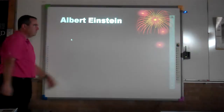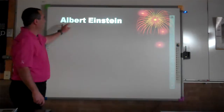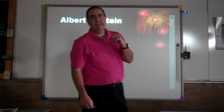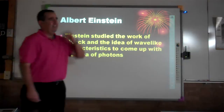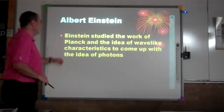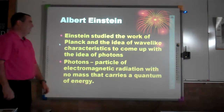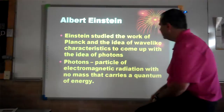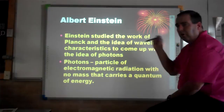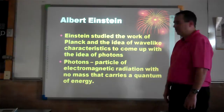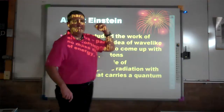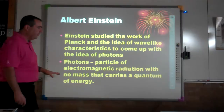Albert Einstein had a lot to do with this. He looked at both the wave-like characteristics scientists talked about and the quantum energy Planck proposed. He found out it is neither purely wave-like nor purely quantum energy, and he came up with the idea of photons. A photon is a particle of electromagnetic radiation, so it really does have wave-like characteristics. Photons don't have mass, but they carry quanta of energy — so both Planck and the wave theorists were correct.